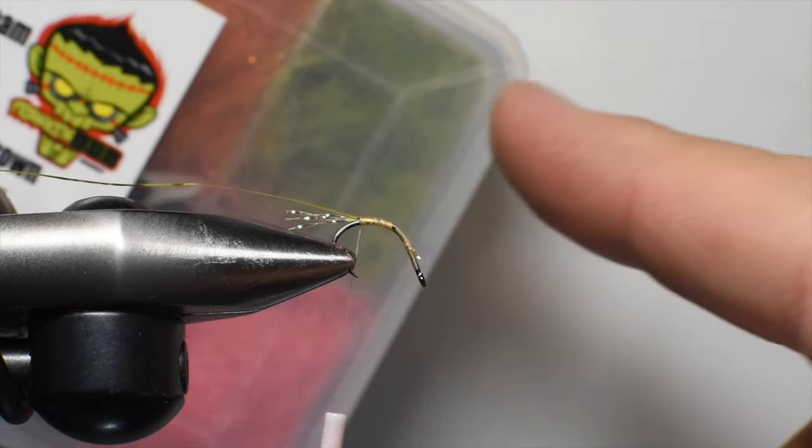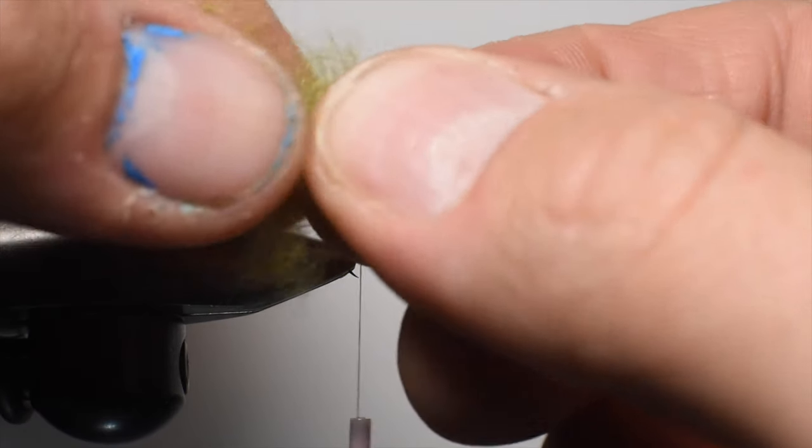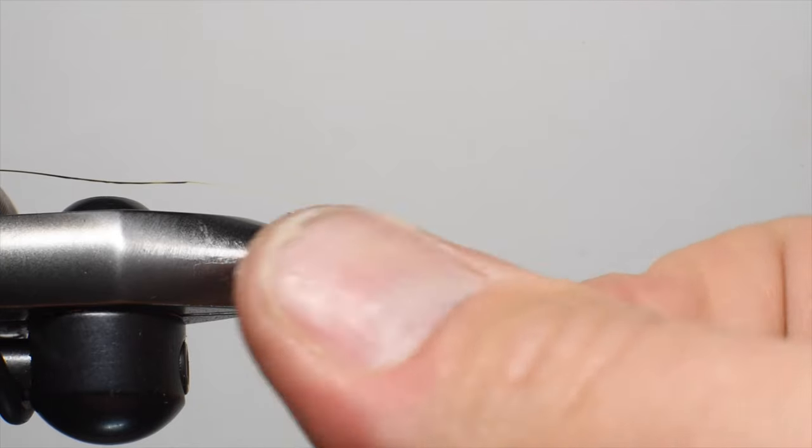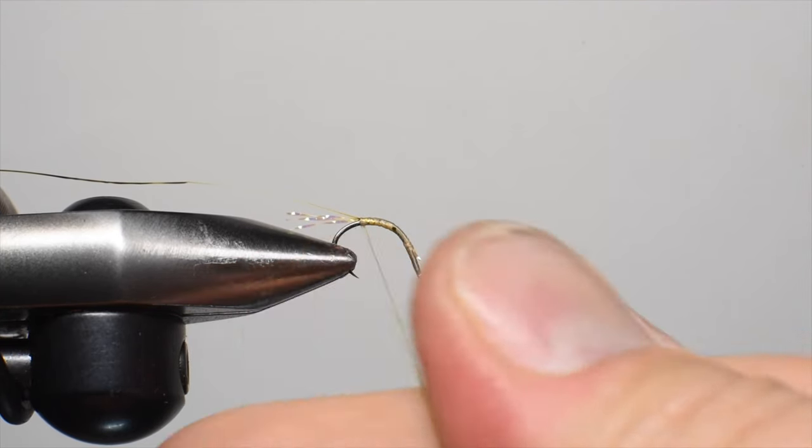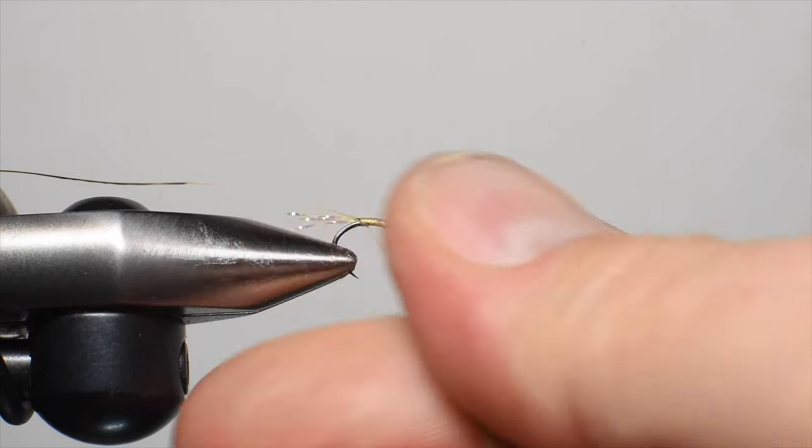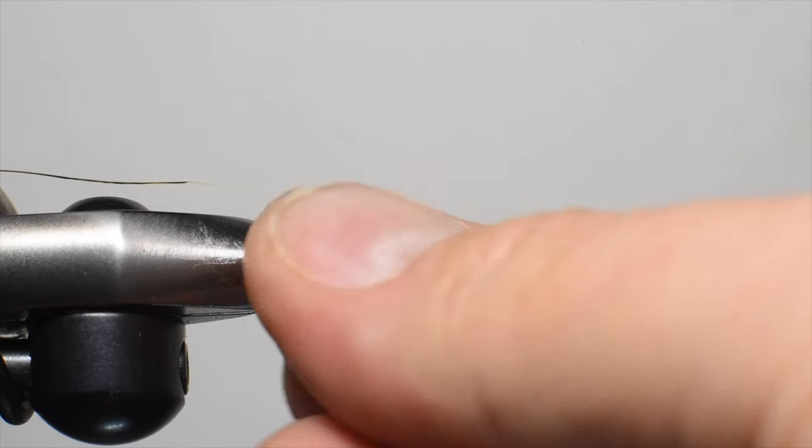We've got the nymph dub. This is by Frankenfly. I'm going to be using the brighter olive. We'll start by pulling out a good clump of this. We're going to use quite a bit because I like to build up a nice little body. Make it a little meatier snack for those trout that are looking up ready to eat. We'll just start by dubbing it onto our thread here. This is a wax thread. It dubs pretty nice on here. You could use a wax to help you in this process. I just kind of lick my fingers and dub it on.